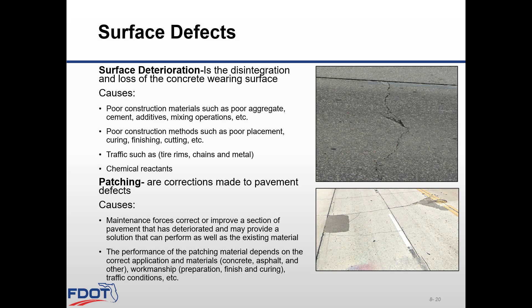Surface defects occur when surface deterioration and/or patching occurs. Surface deterioration is the disintegration and loss of the concrete wearing surface. Causes include poor construction materials such as poor aggregate, cement, additives, or mixing operations; poor construction methods such as poor placement, curing, finishing, or cutting; traffic such as tire rims, chains, and metals; and chemical reactants. For patching, these are corrections made to pavement defects — maintenance forces correct a section of pavement that has deteriorated. Performance of patching material depends on correct application and materials (concrete, asphalt, or other), workmanship, preparation, finishing, curing, and traffic conditions.